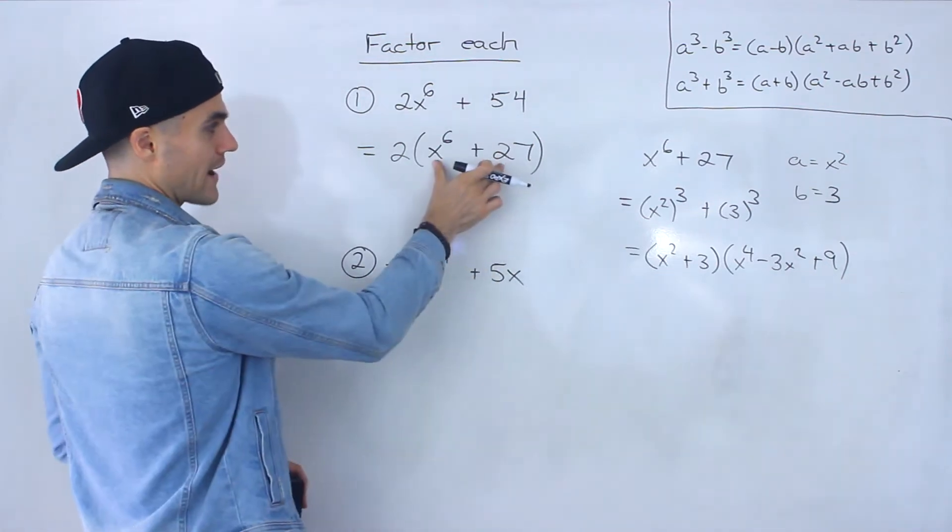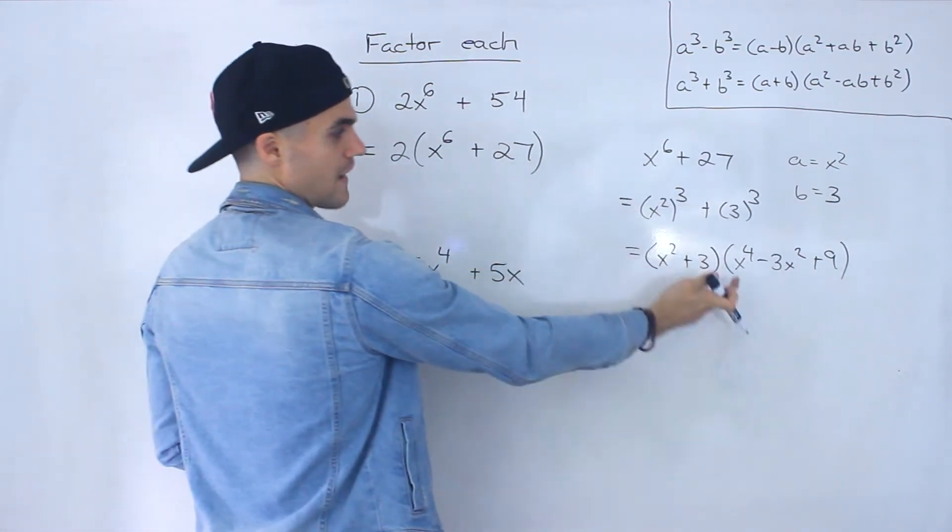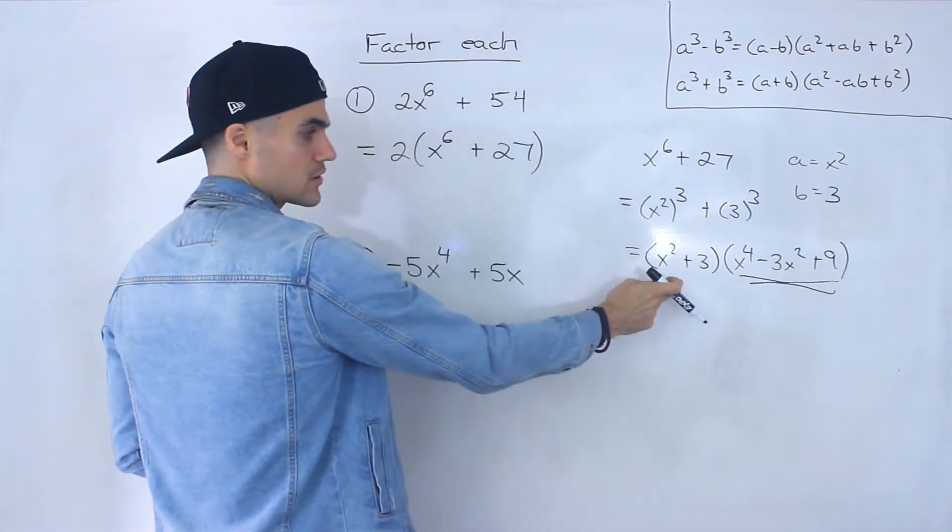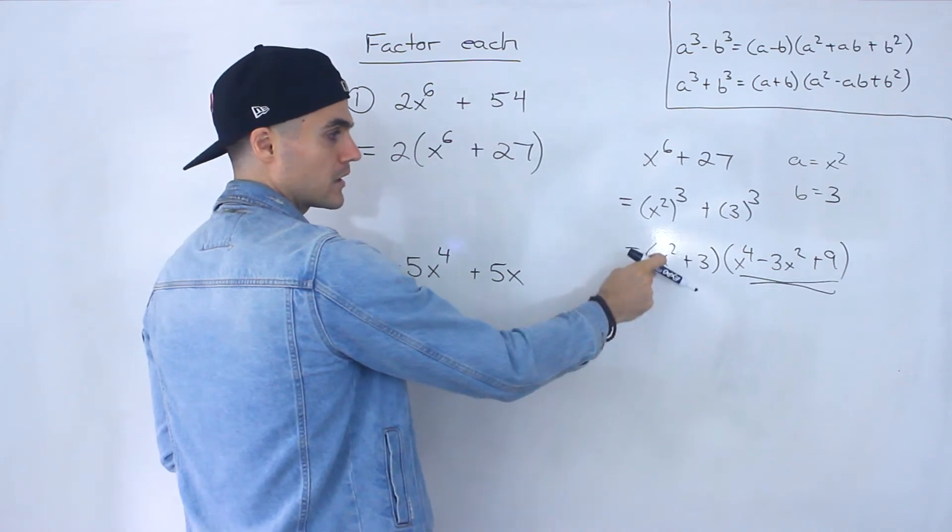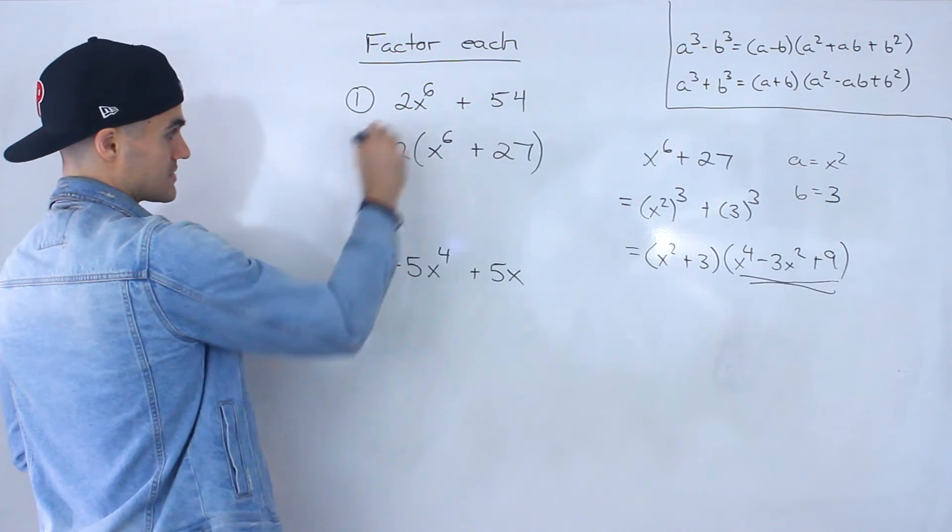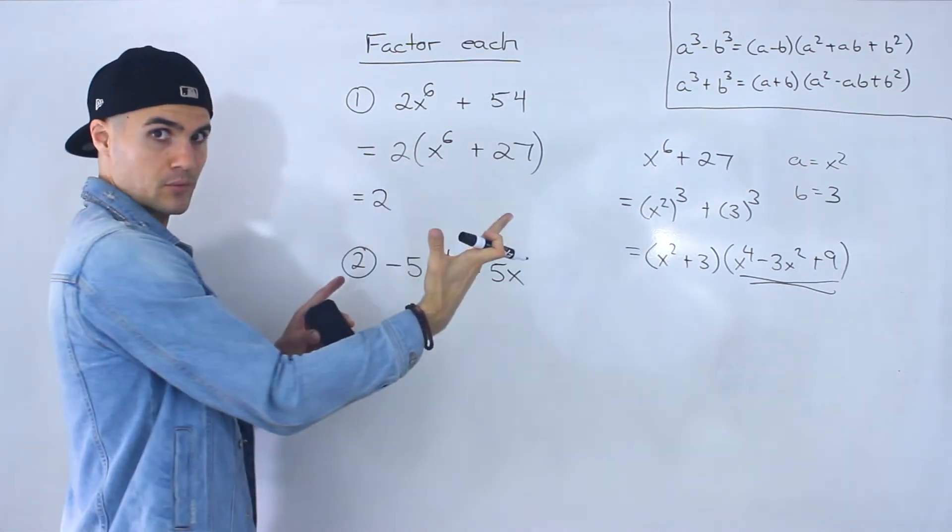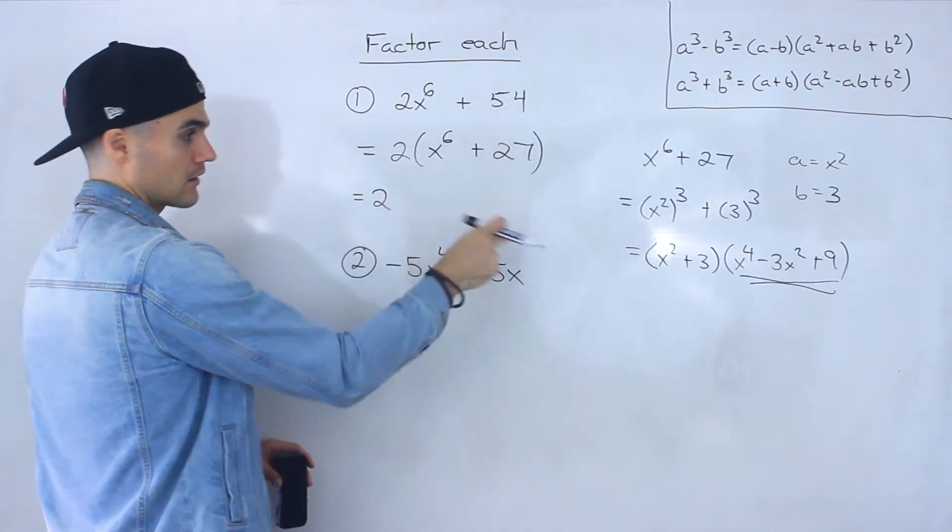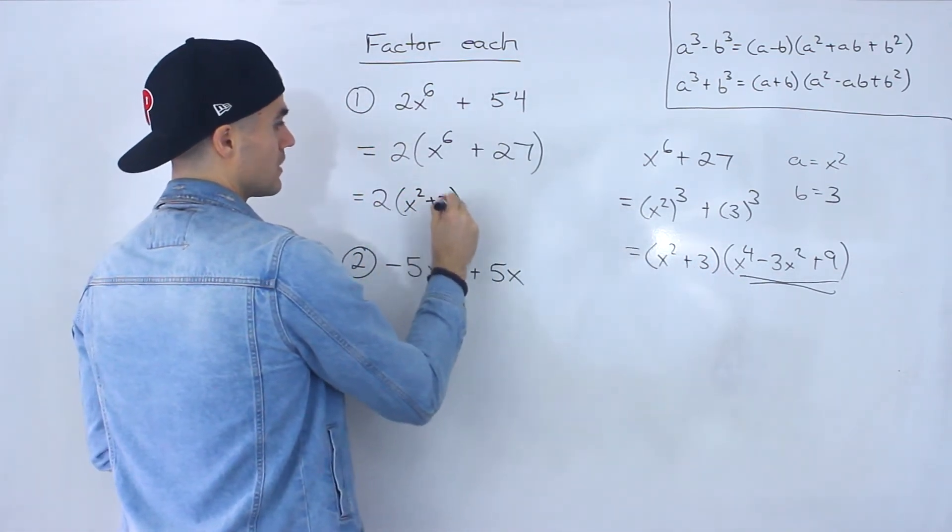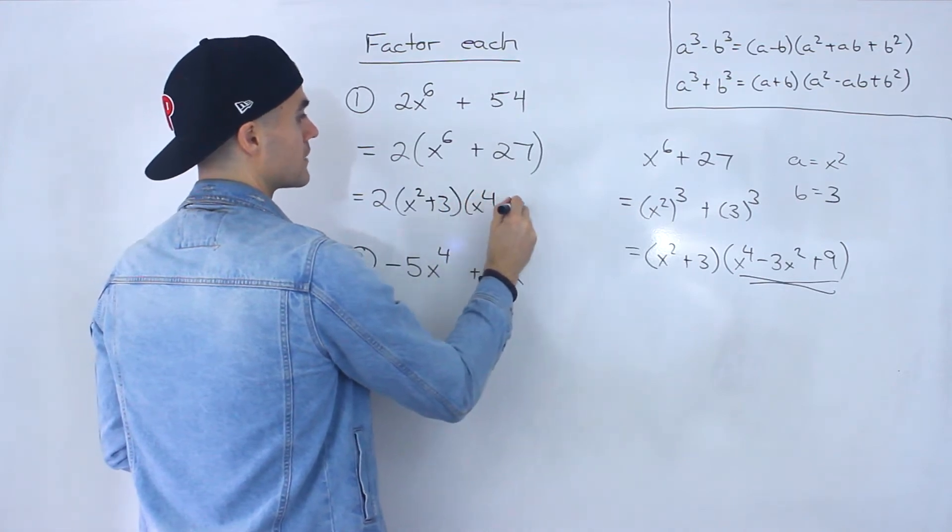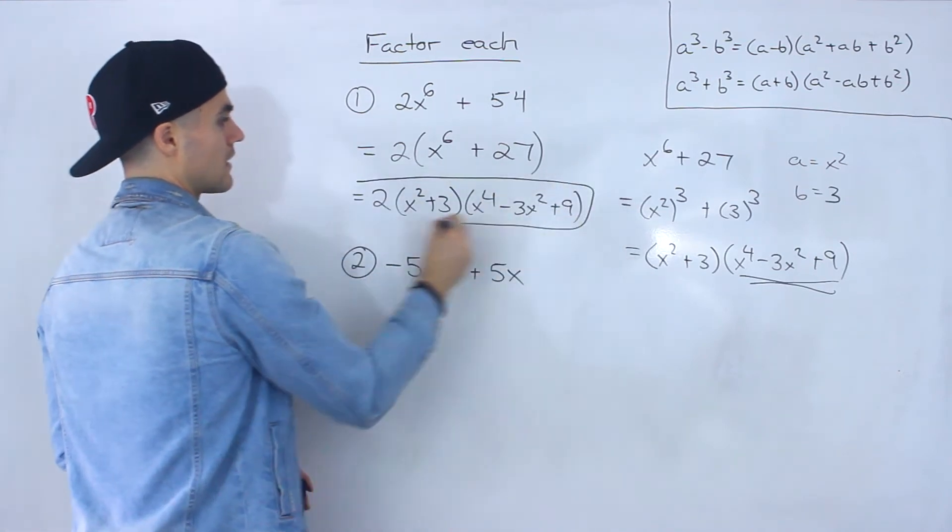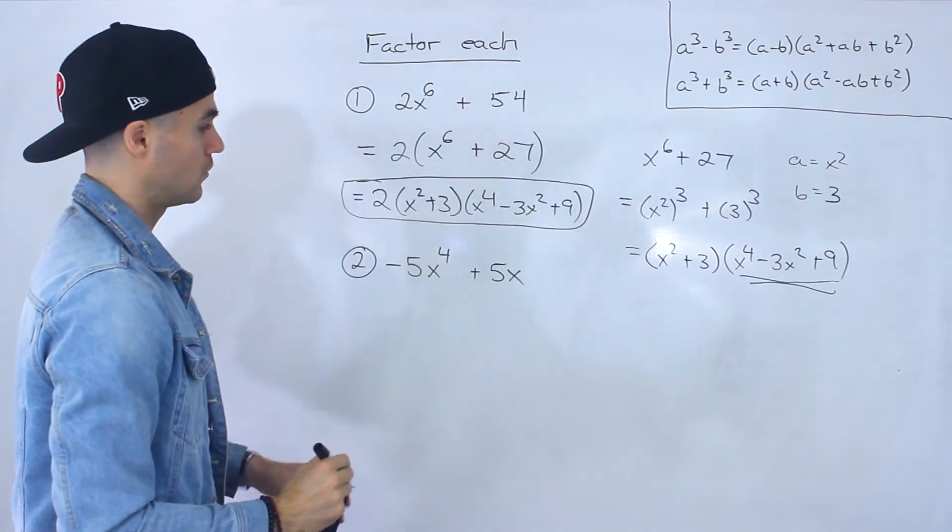Okay so this bracket here, this factors into these two brackets and then this bracket we know can't factor further. You always want to check if this bracket could factor further but x squared plus 3, you can't factor that. So the final answer for this would end up being 2. The 2 that we initially factored out, you got to keep it there. But then this factors into these two brackets: x squared plus 3 and then we got x to the 4 minus 3x squared plus 9. So that there is the final answer for number 1.